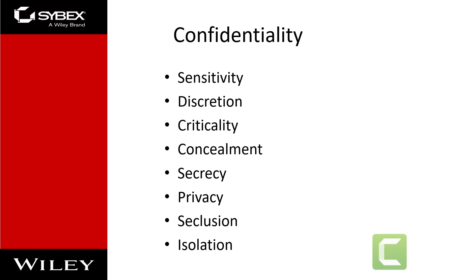Confidentiality focuses security measures on ensuring that no one other than the intended recipient of a message receives or is able to read it. It provides a means for authorized users to access and interact with resources while actively preventing unauthorized users from doing so. A wide range of security controls can provide confidentiality protection, including encryption, access controls, and steganography.